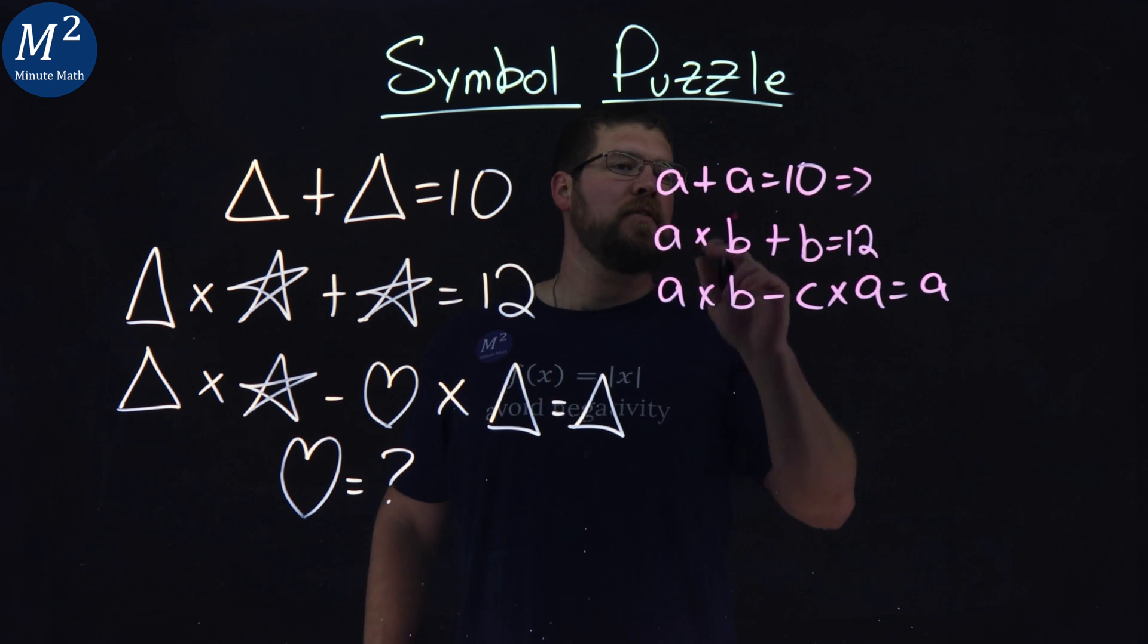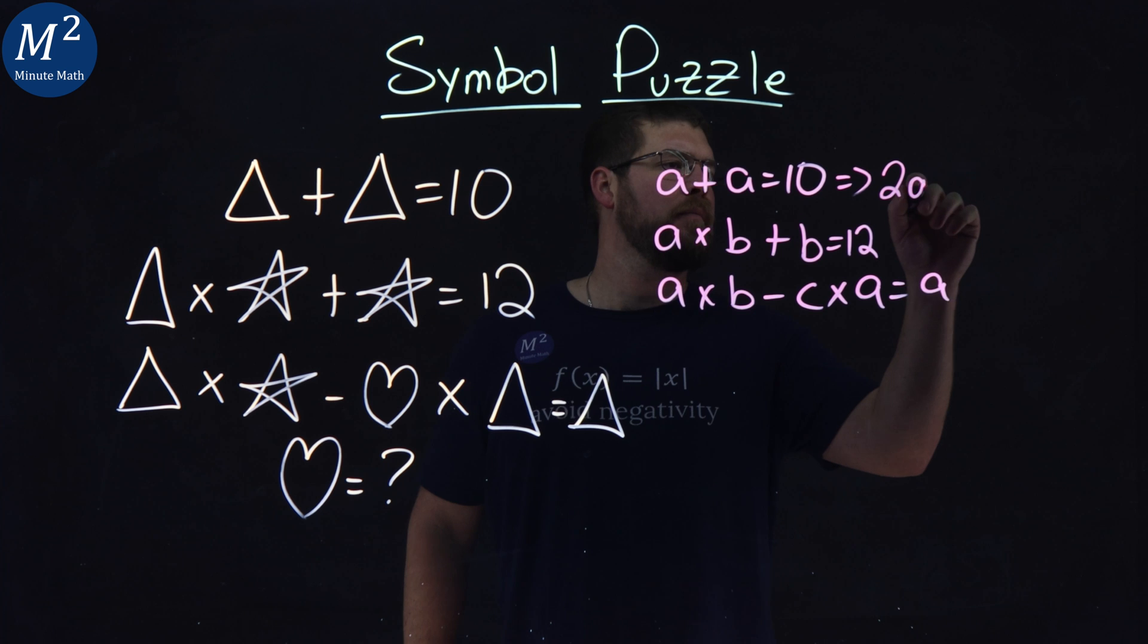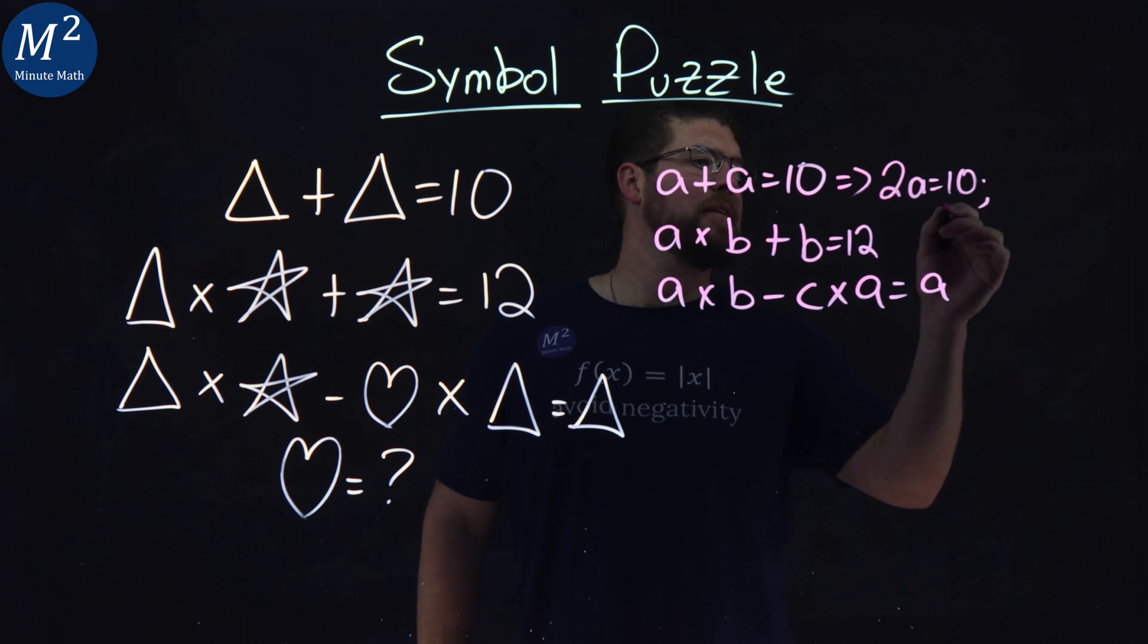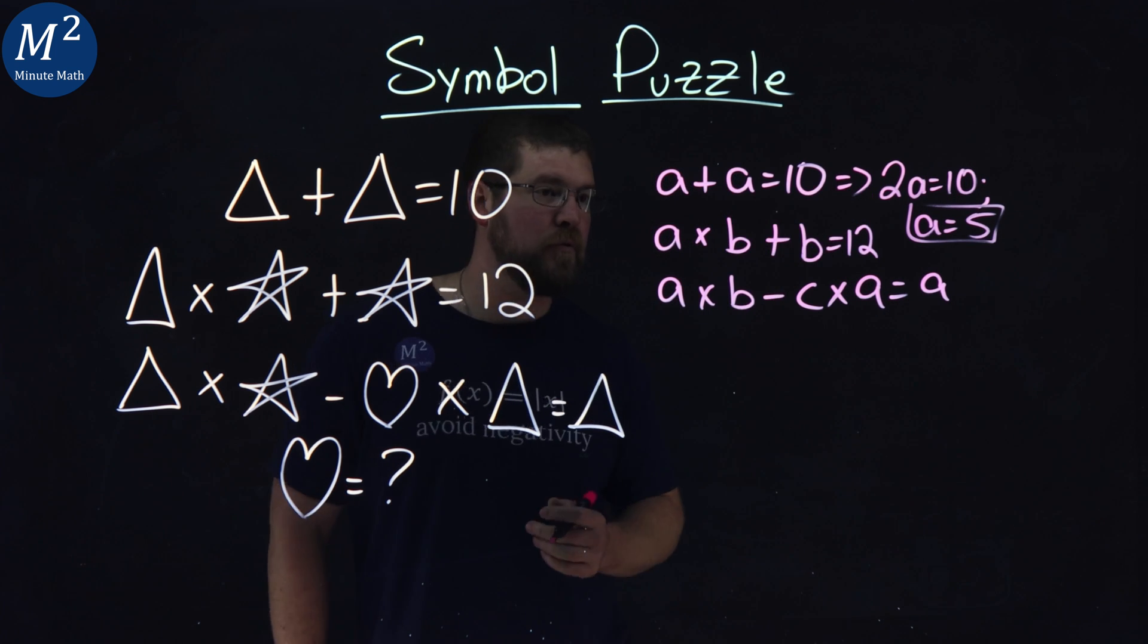The first part is pretty easy. A plus A is 2A equals 10. So A equals 5. Divide by 2 on both sides, A equals 5.